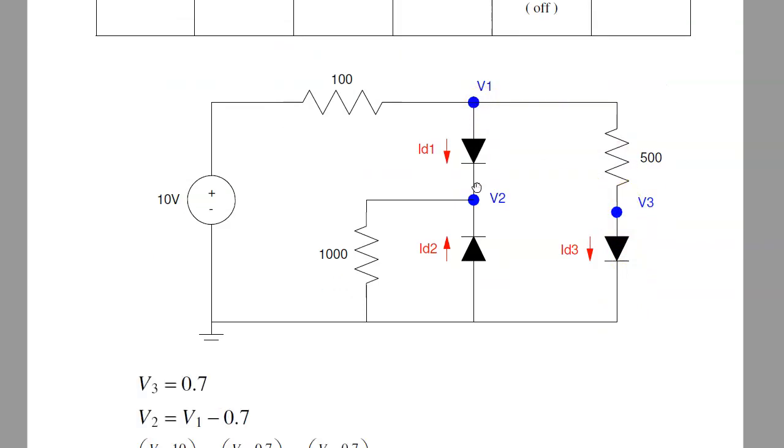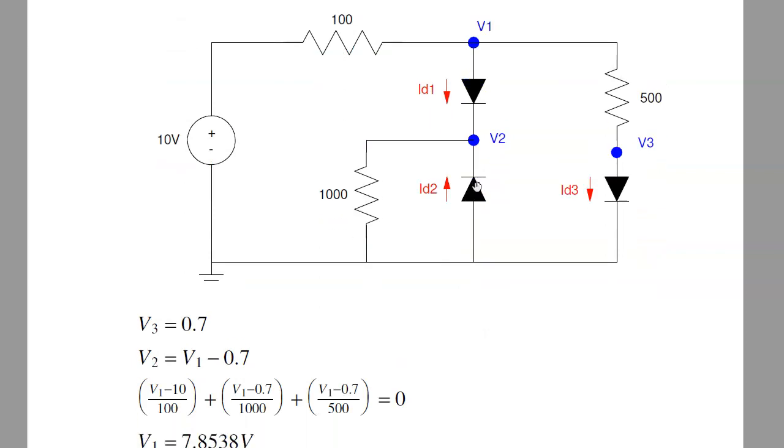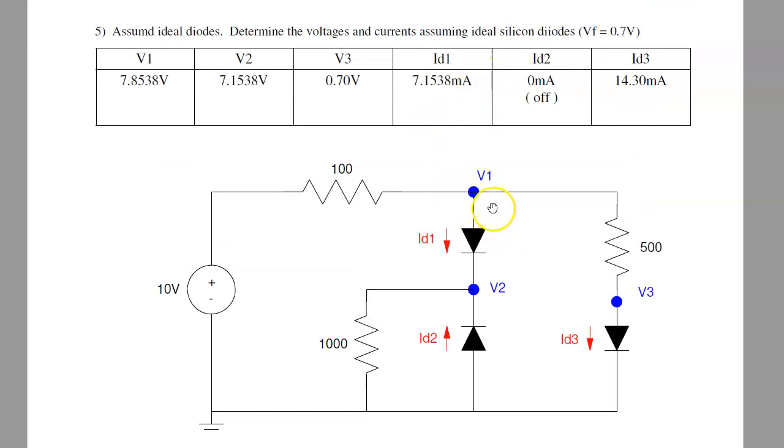So writing my one equation for one unknown gives you V1 minus 10 over 100, plus V1 minus 0.7 over 1000, plus V1 minus 0.7 over 500 equals zero. Solving I get V1 is 7.85 volts. Once I know V1, I know V2 is V1 minus 0.7. V3 is just 0.7.